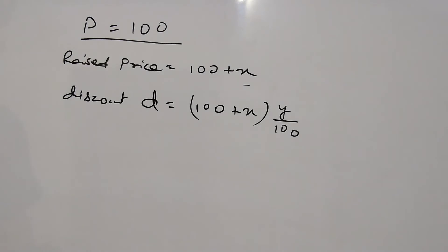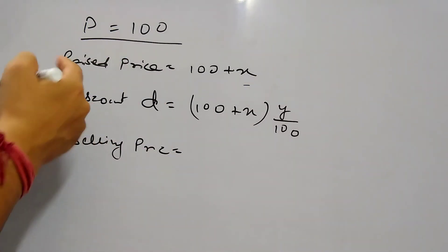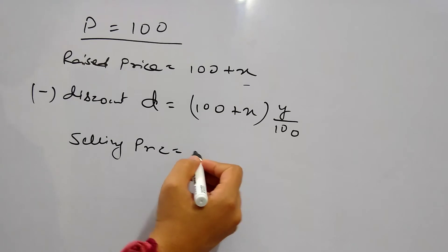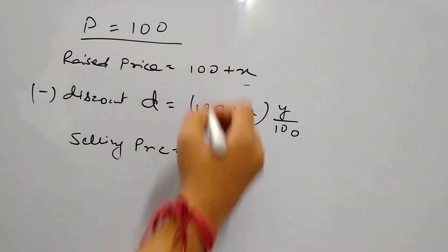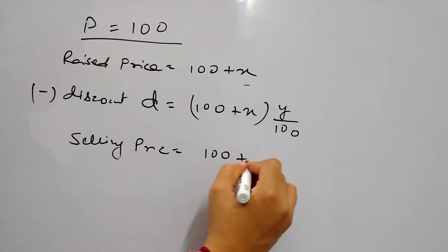So finally the selling price at which the shopkeeper will sell this item is raised price minus discount price. So it is 100 plus X minus D.